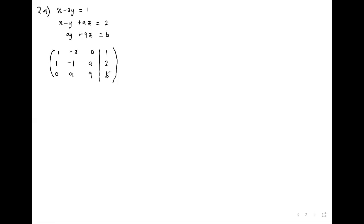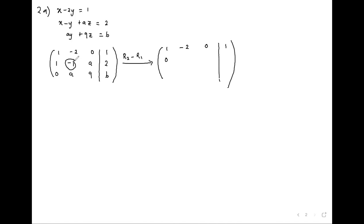We reduce in the normal way. Row two minus row one gives: 1, -2, 0, 1; then 1 minus 1 is zero, negative 1 minus negative 2 gives positive 1, A minus 0 gives A, 2 minus 1 gives 1. Then 0, A, 9, B. Next, we want zero in the third row, so we say row three minus A times row two.